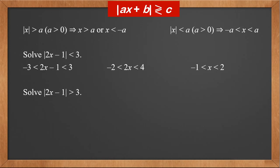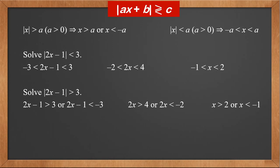Solve the modulus of 2X minus 1 is greater than 3. Then 2X minus 1 is greater than 3, or less than minus 3. So 2X is greater than 4, or less than minus 2. So the answer is X greater than 2, or X less than minus 1.